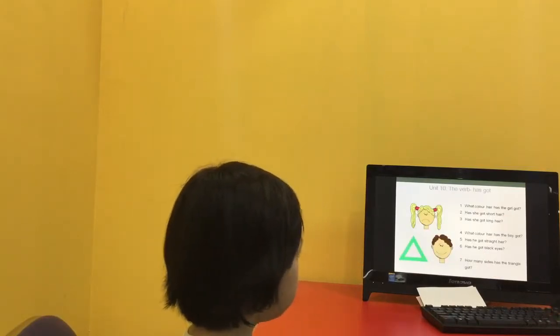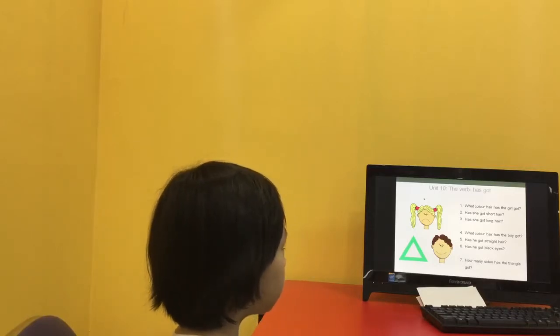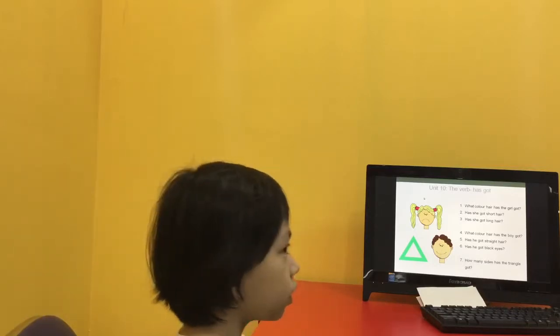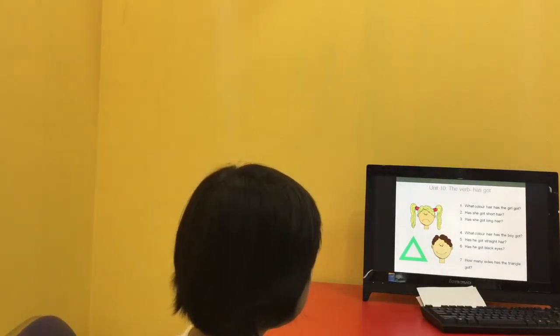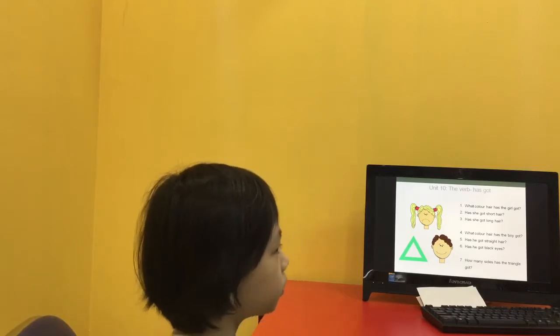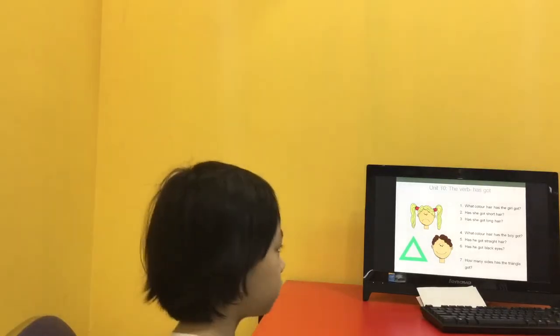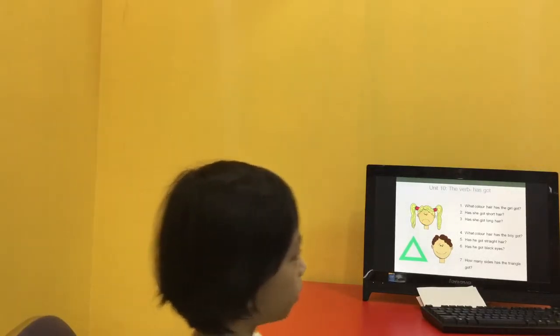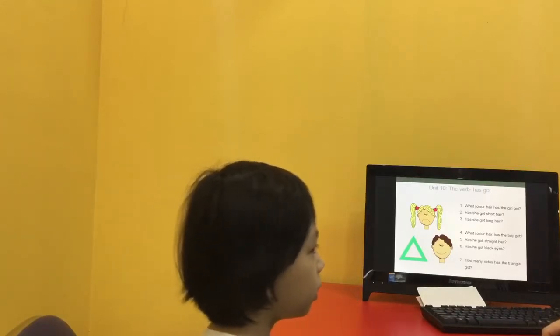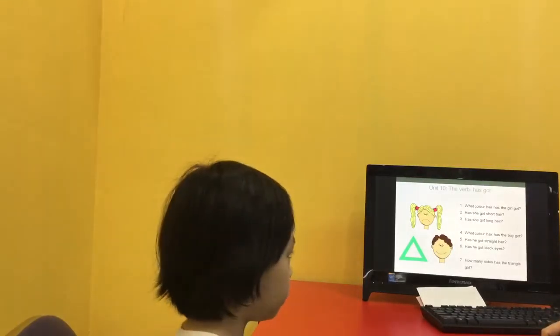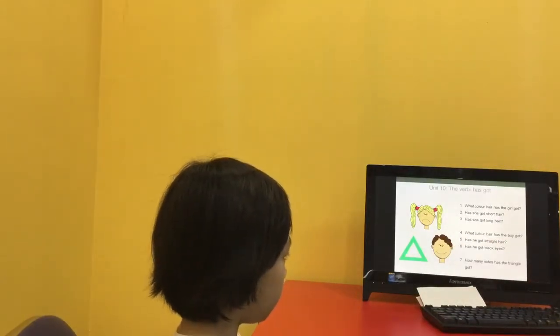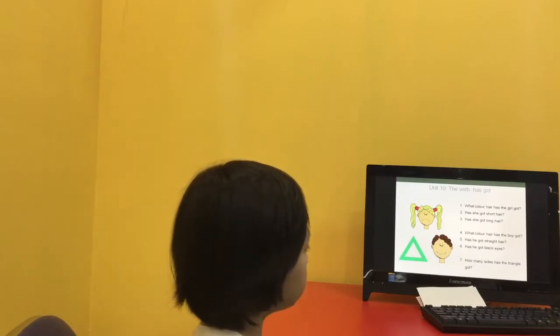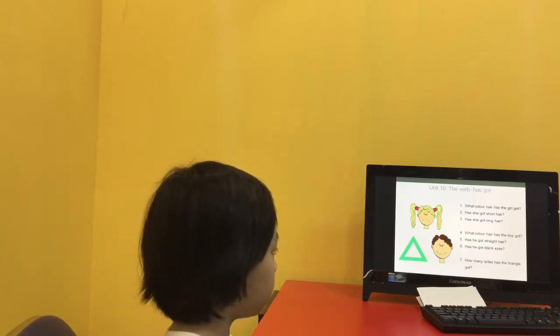Okay. What colour is her hair? Long. Good. Has she got short hair? No, she hasn't. No, she hasn't. Has she got long hair? Yes, she has. Yes, she has. Well done. Has the boy got long hair or short hair? He's got short hair. Short hair. Good, well done.